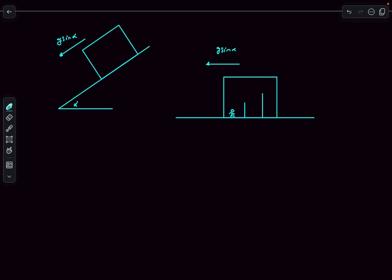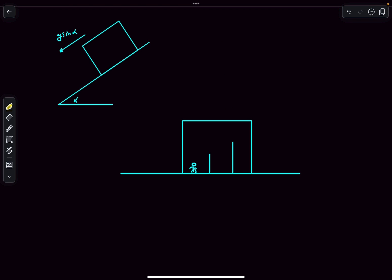This is how the arrangement is looking like now. As the entire game is happening within this box, we can simply take the box as our frame of reference, so we can simply forget about this g sine alpha. Now this is like a universe where the effective gravity is g cos alpha.